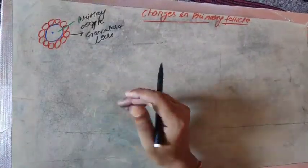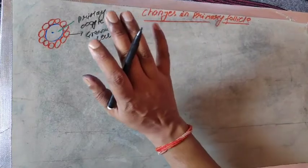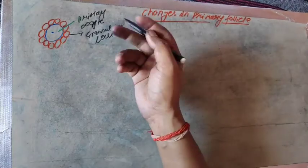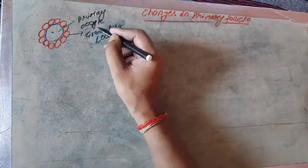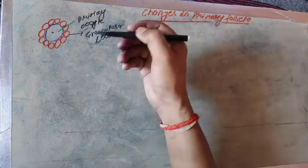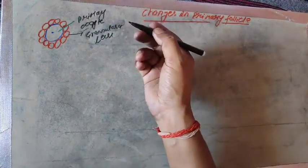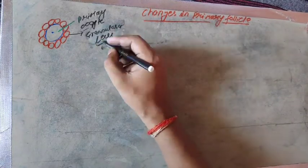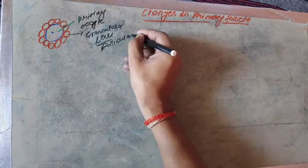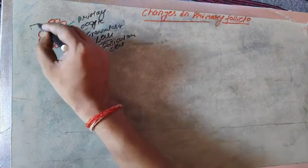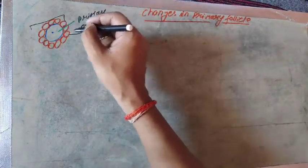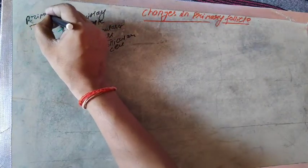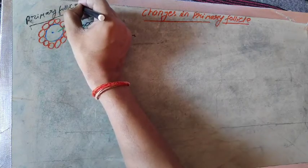Students, now we are going to describe what happens in primary follicles before maturity and after maturity. In the previous video lecture, I explained how primary follicles form. The primary oocyte forms granulosa layers — these granulosa cells are also known as follicular cells. The complete structure of the primary oocyte with a single layer of granulosa cells is known as primary follicles.